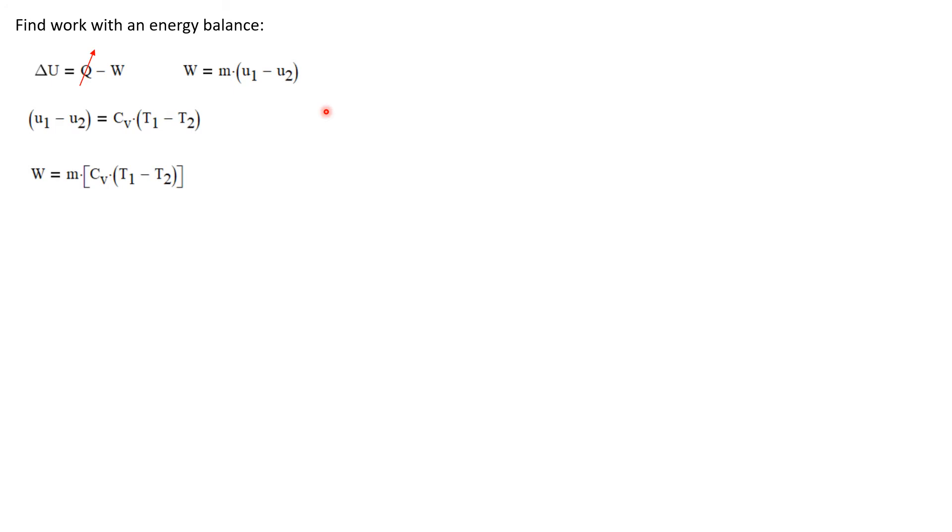Let's find the work done during this process with an energy balance. A closed system energy balance where we're ignoring kinetic and potential energy effects. It's just that delta U is Q minus W. But this is an adiabatic process. The Q is 0. And we end up with just that the work is the change in internal energy, which we're going to write as the mass times the change in specific internal energy. But U1 minus U2 can be calculated if we assume constant specific heats as C sub V times T1 minus T2. So we can substitute this term into our original energy balance. And we get the work is the mass times C sub V times T1 minus T2.